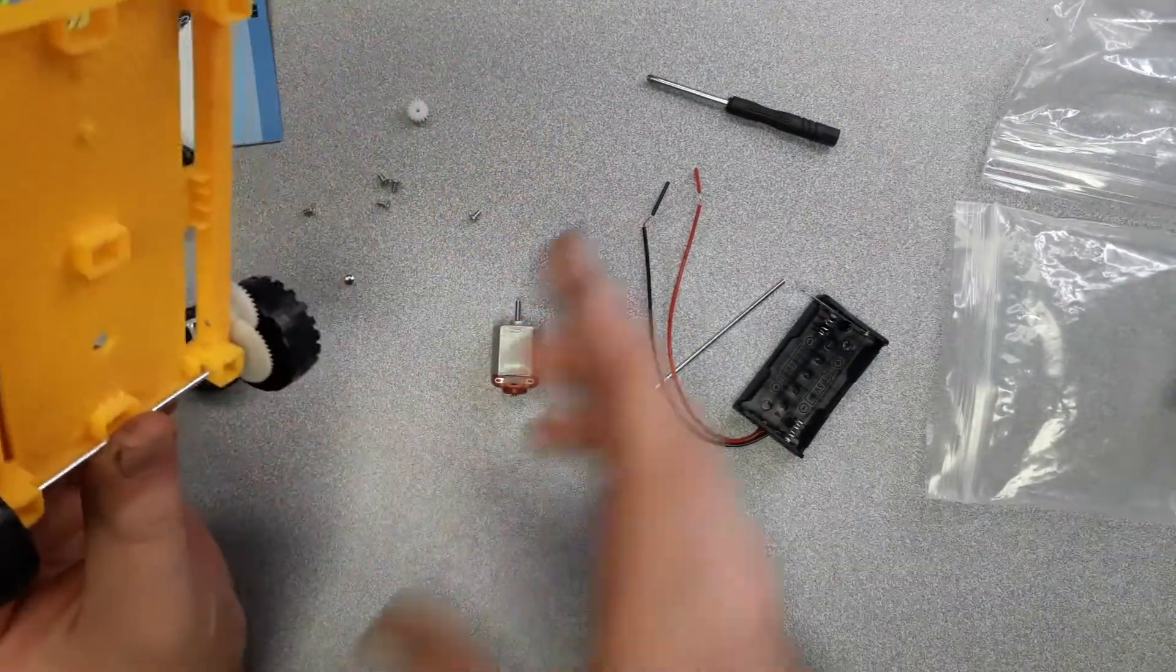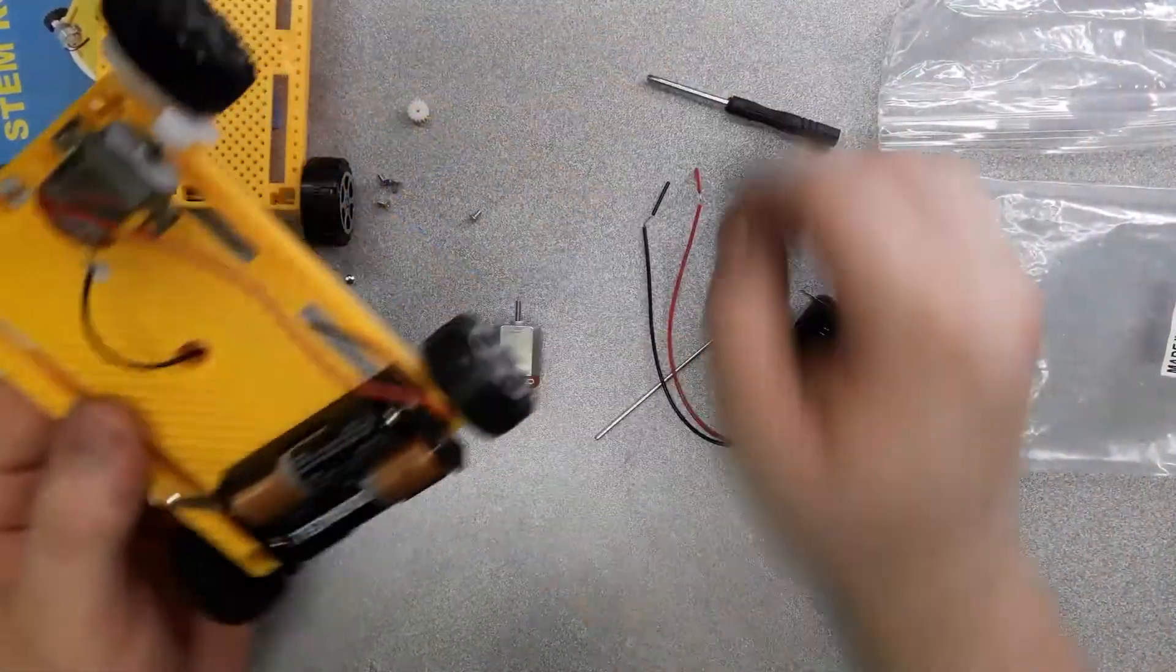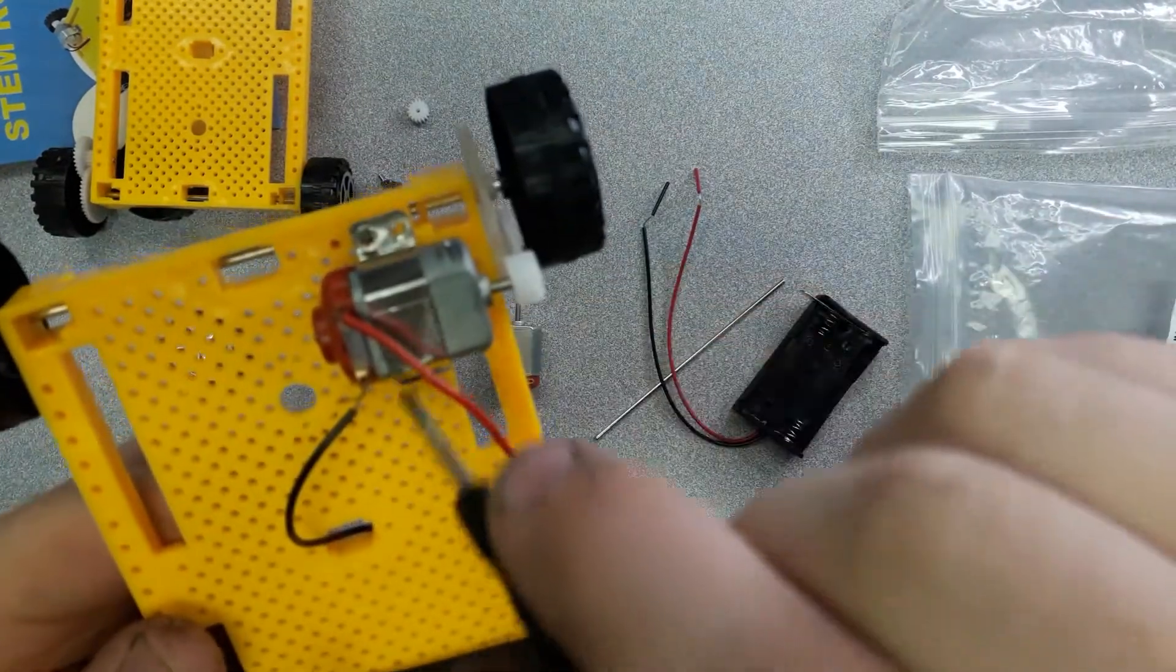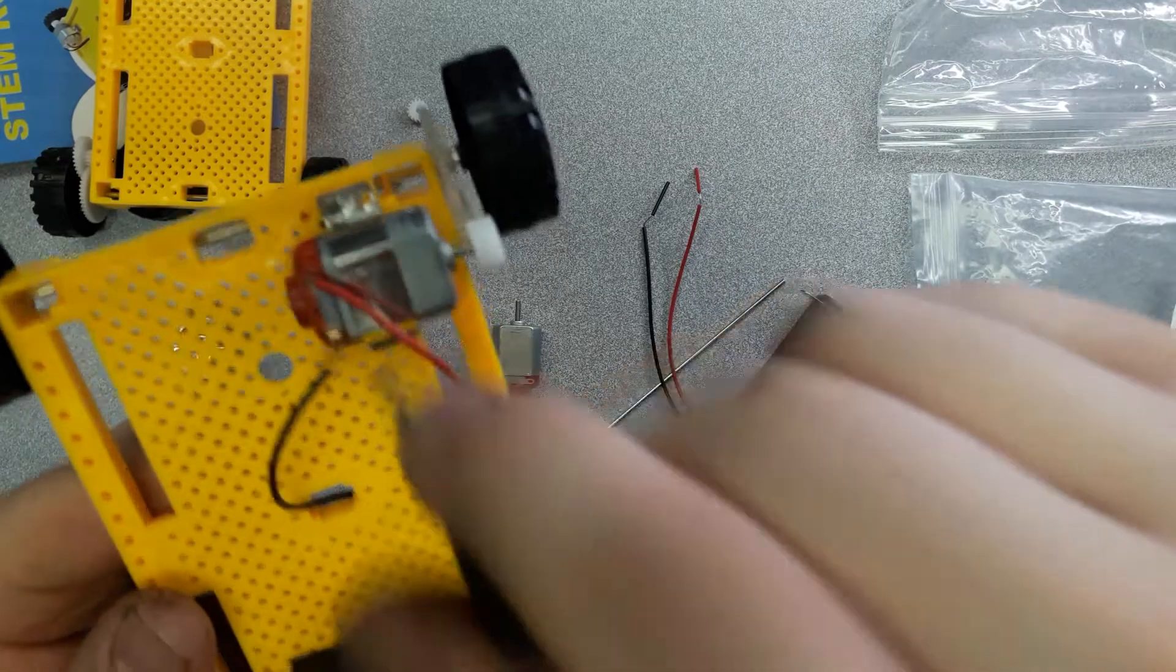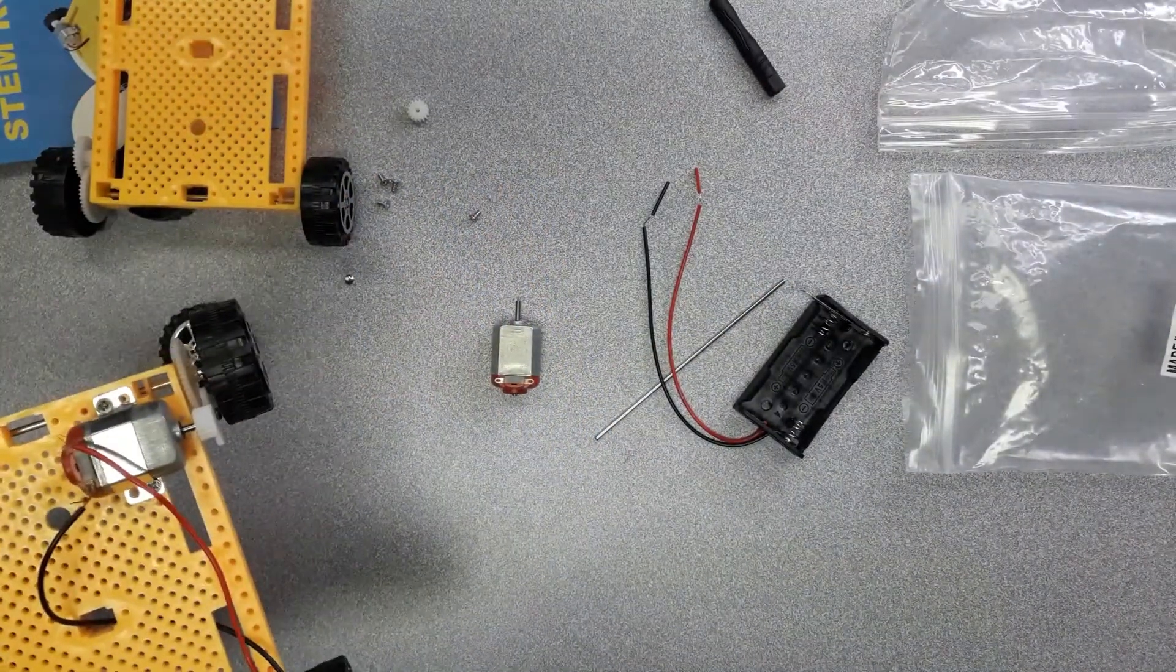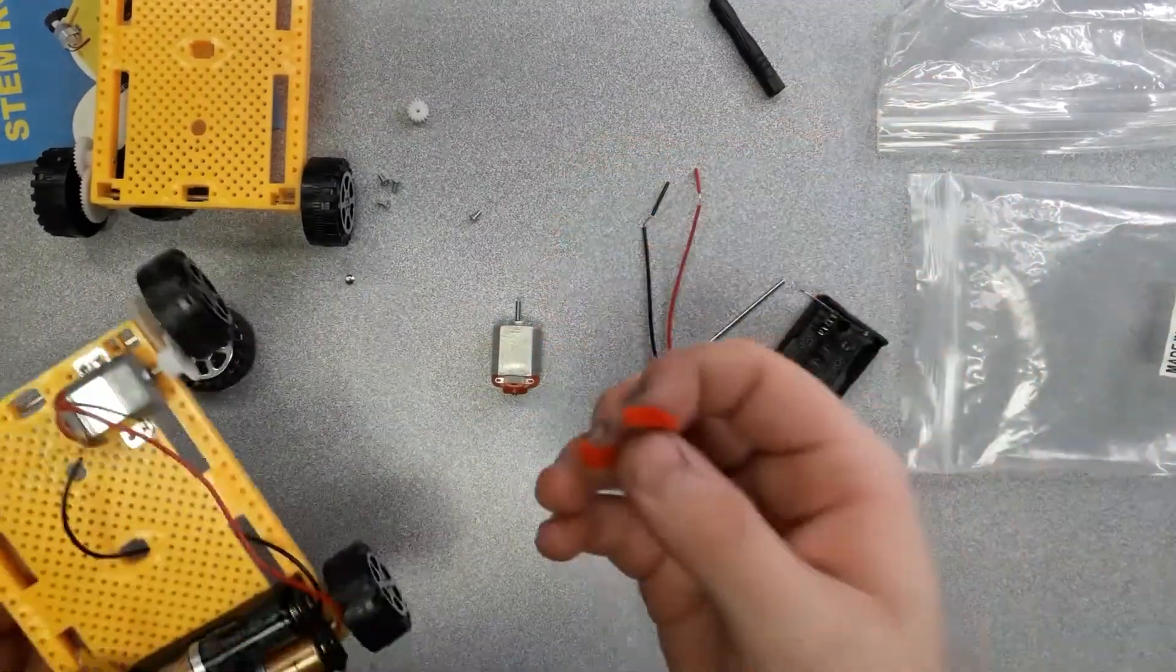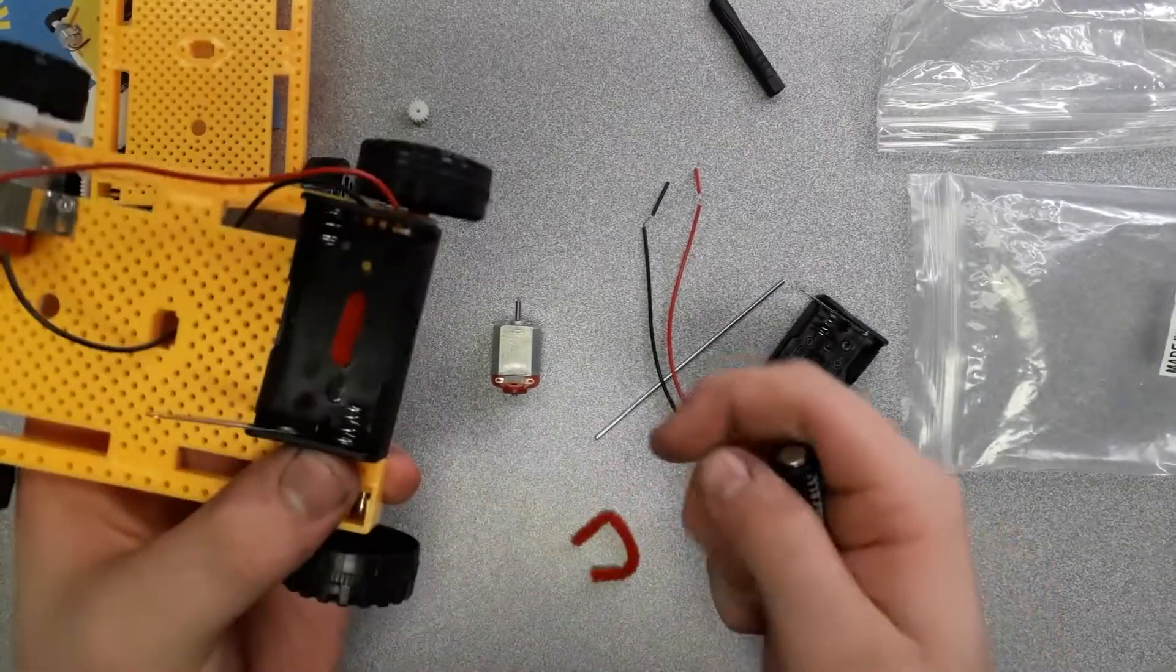And then to save time I'm going to show you on the already built version. With the motor mount you can put screws in each four of the holes and put it down on there. Which for little hands that might be tough.